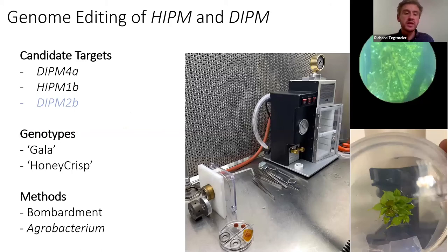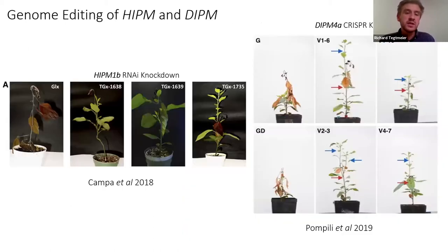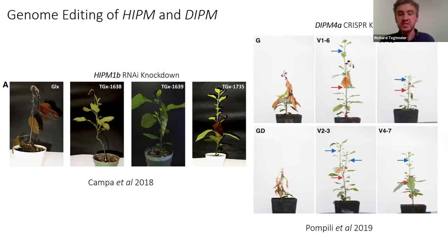I'm targeting DIPOM 4a and HIPOM 1b in the genotypes Gala and Honeycrisp via bombardment and Agrobacterium, with interest in DIPOM 2b from the previous work. Validation from previous literature shows a knockdown of HIPOM 1b in the cultivar Galaxy, which is very susceptible as wild type, with transgenic explants showing quite reduced susceptibility. More recently, a full CRISPR knockout of DIPOM 4a in Gala and Golden Delicious shows susceptible response in controls, while transgenic plants have reduced susceptibility and significant upward growth.